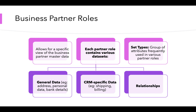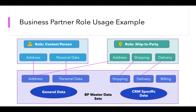Set types are groups of attributes frequently used in business partner roles — they are clubbed together and called set types. For example, in the business partner master data shown at the bottom of the screen, we have general data such as address and personal data, as well as CRM-specific data including shipping, billing, delivery, and pricing.